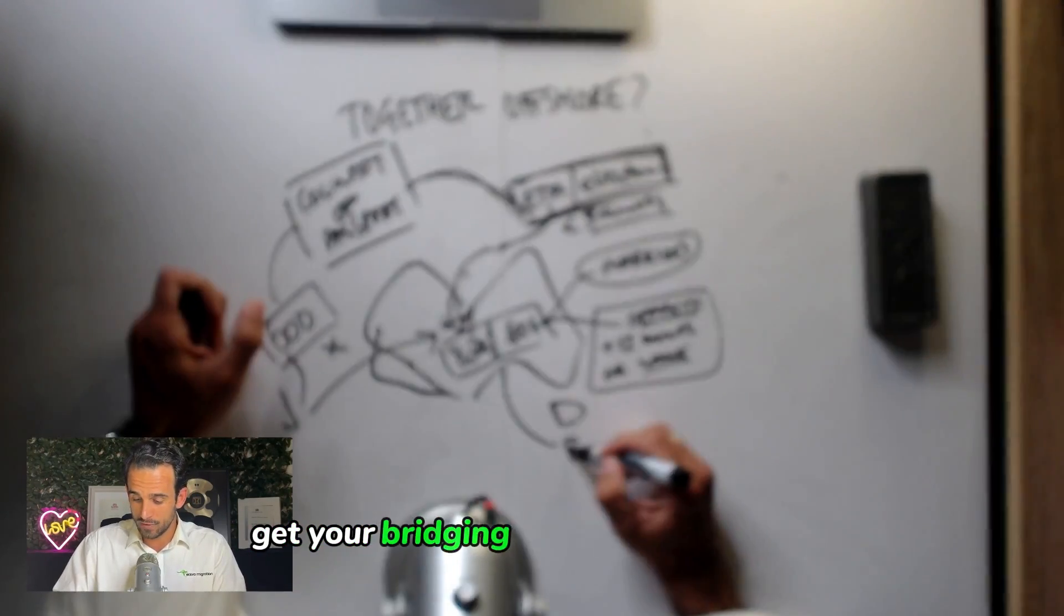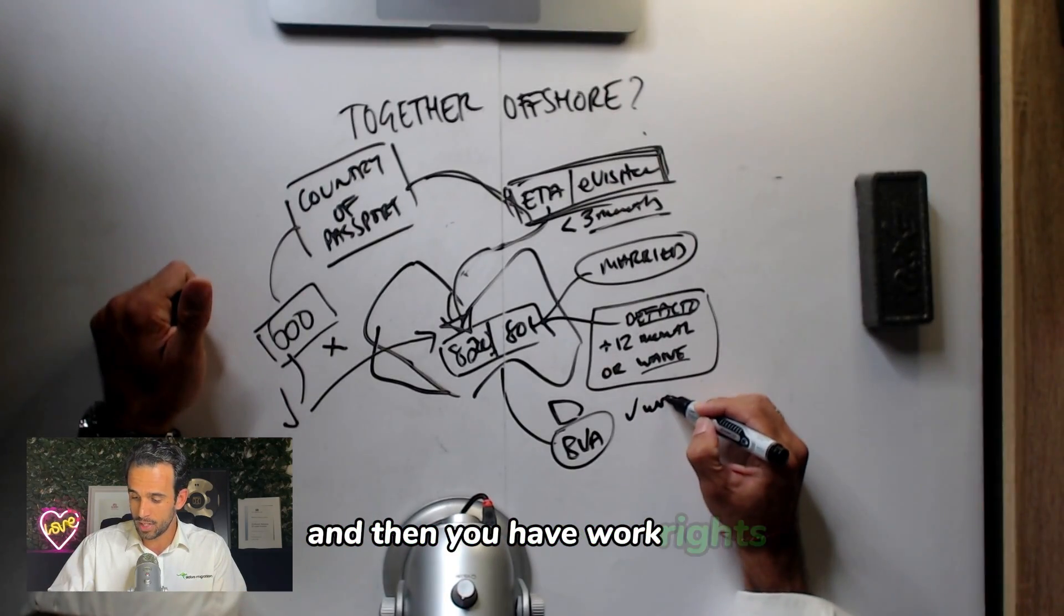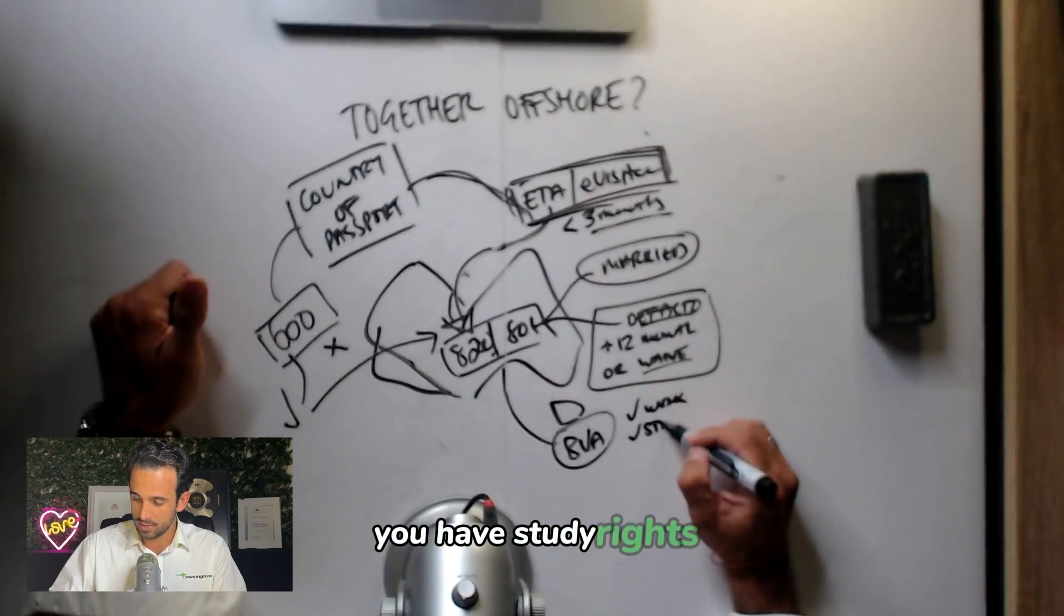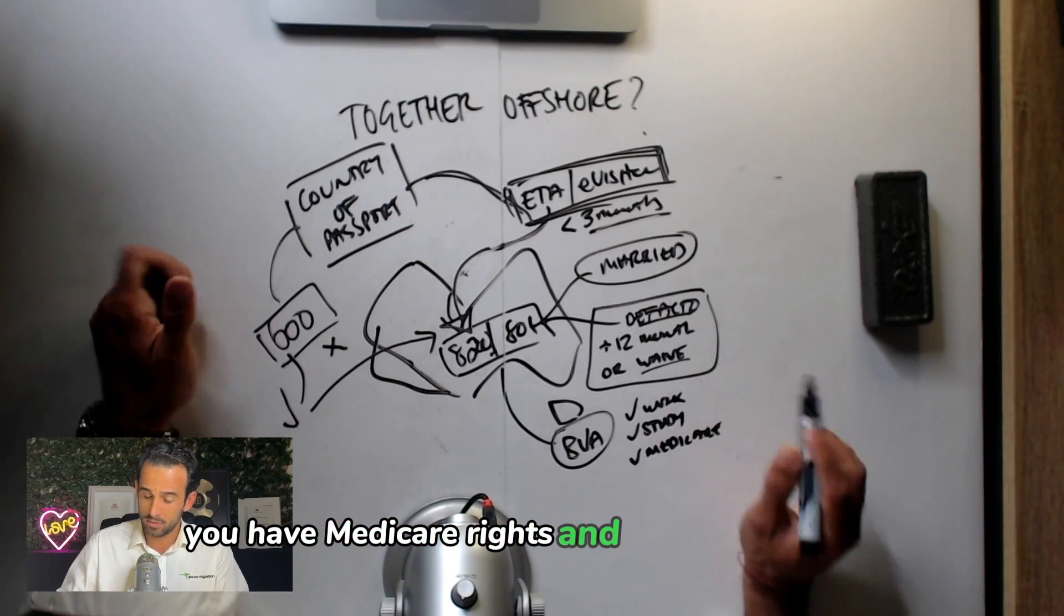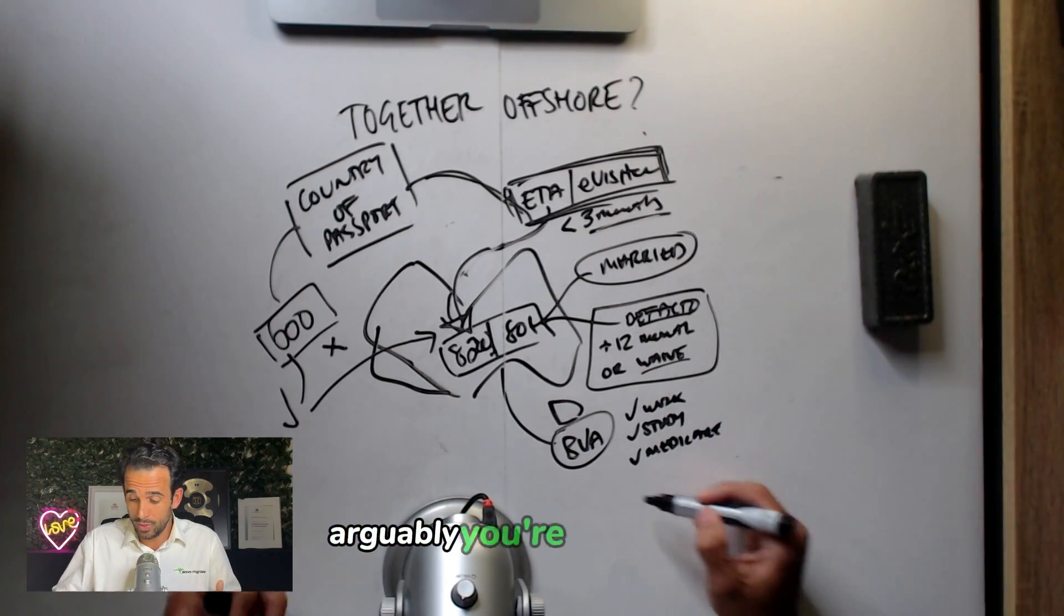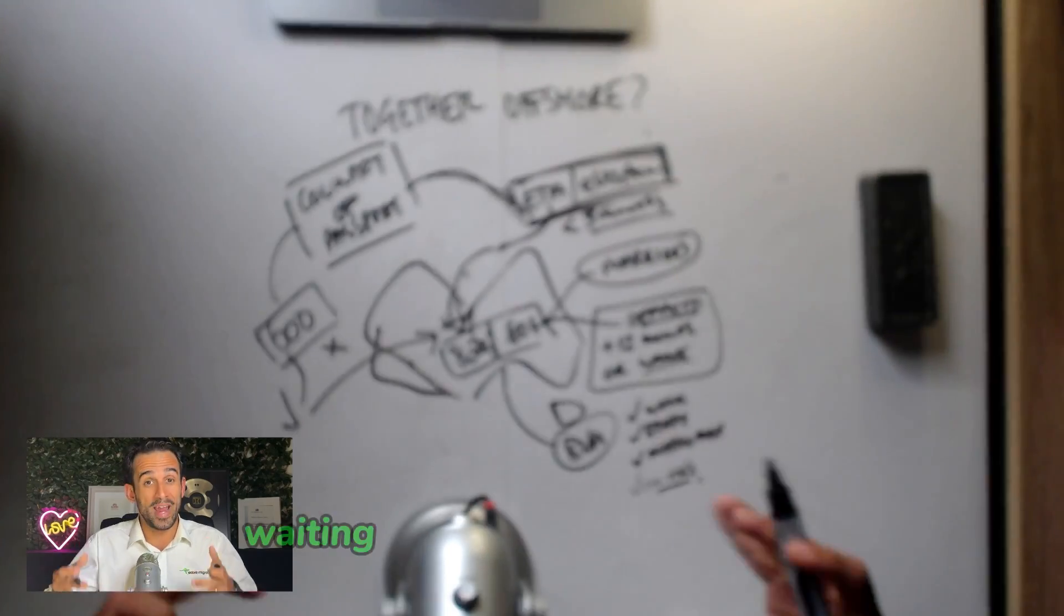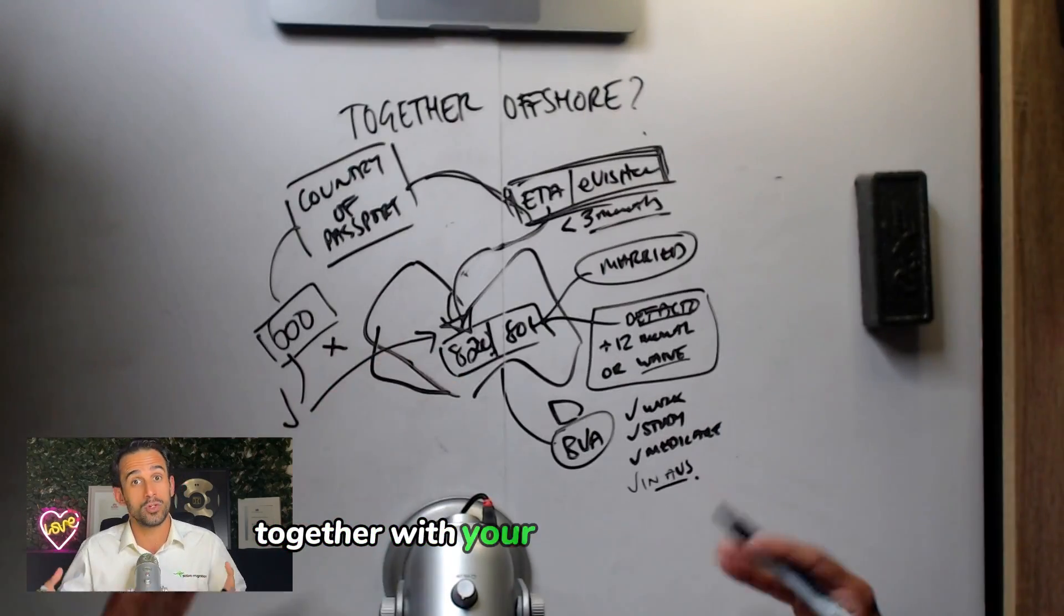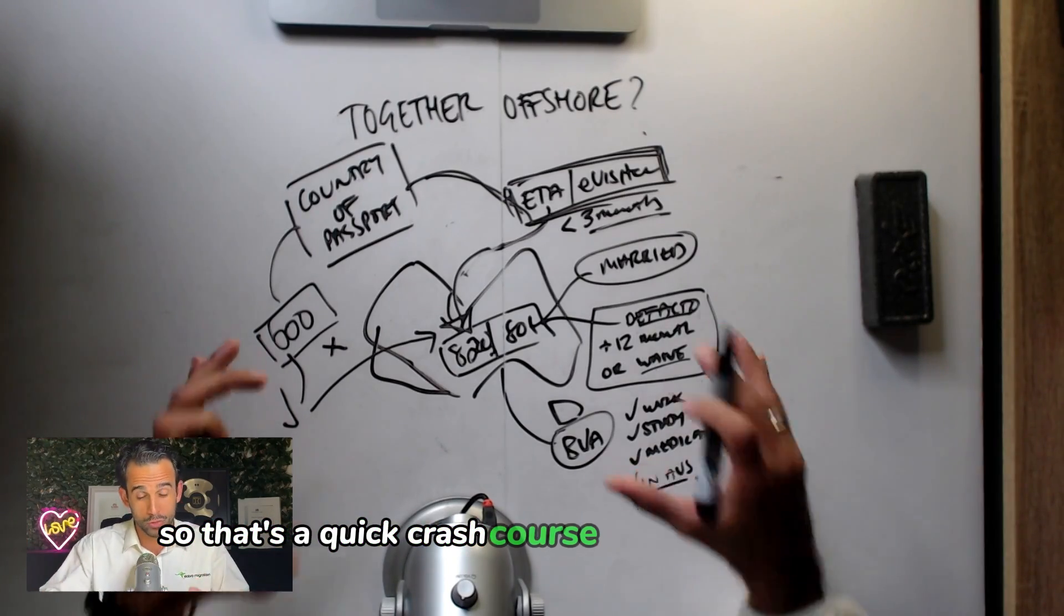Get your bridging visa A automatically, and then you have work rights, you have study rights, you have Medicare rights, and most importantly, arguably, you're in Australia waiting for that onshore partner visa together with your Australian partner who can come in on their Australian passport. So that's a quick crash course of that pathway.